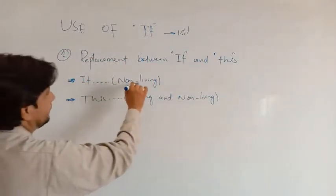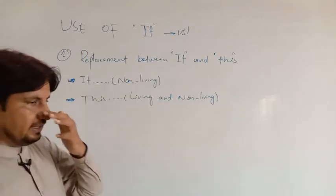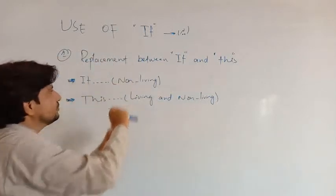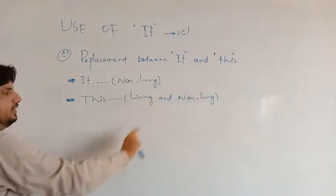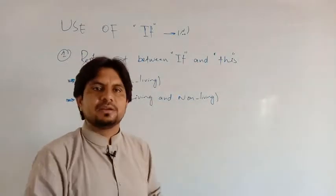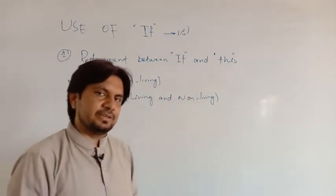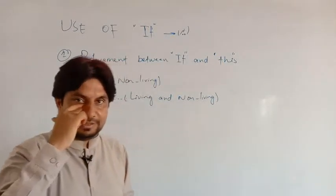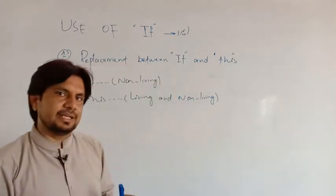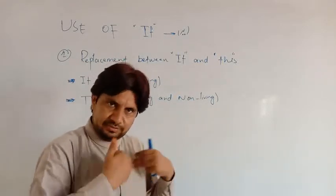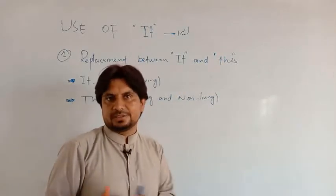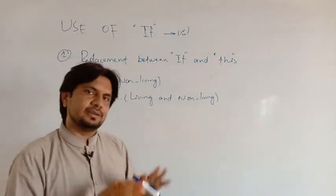'It' is associated with non-living things. When you are talking about non-living things like a table or a chair, you can use 'it'. 'This' can be used for both living and non-living things, but 'it' is specific only for non-living things. You cannot apply 'it' to a living thing like a person. As an introduction, I say 'this is Vakar' — I cannot say 'it is Vakar'.